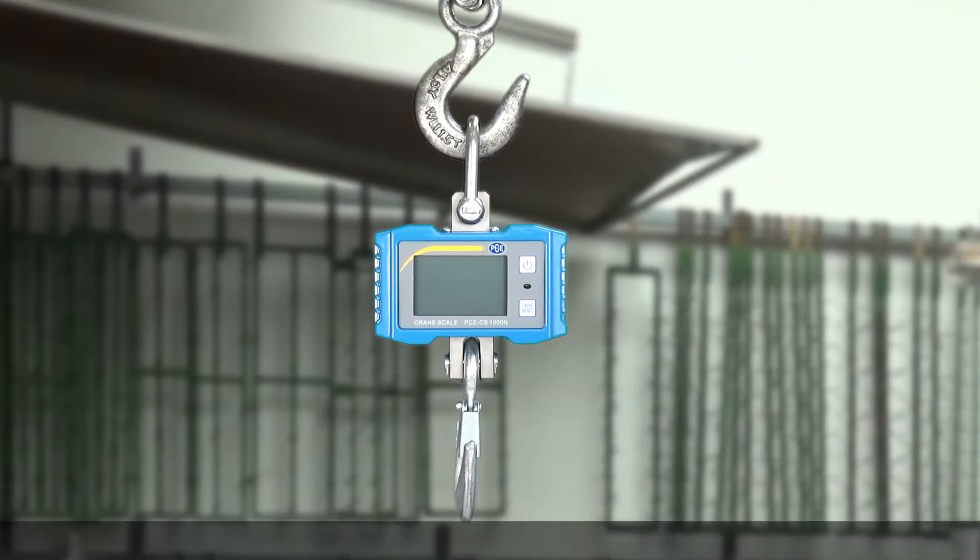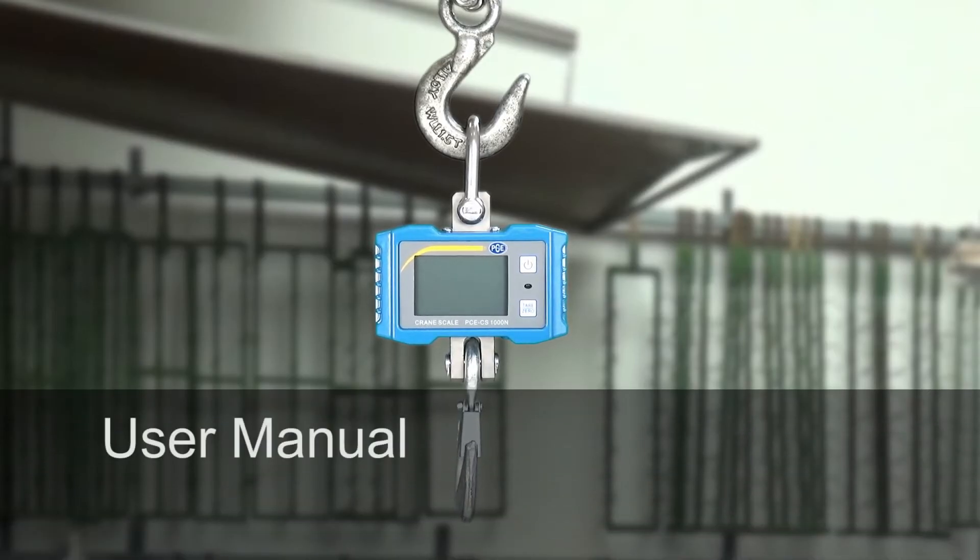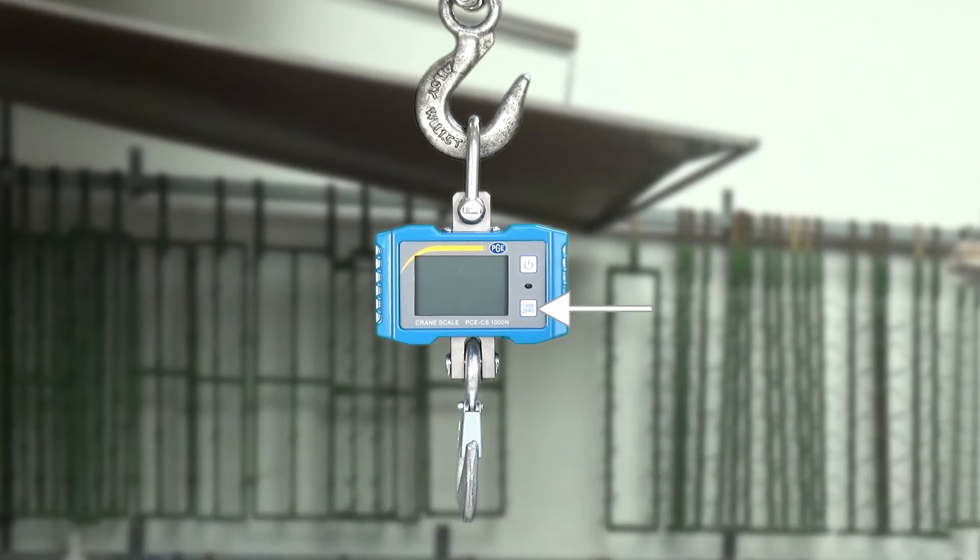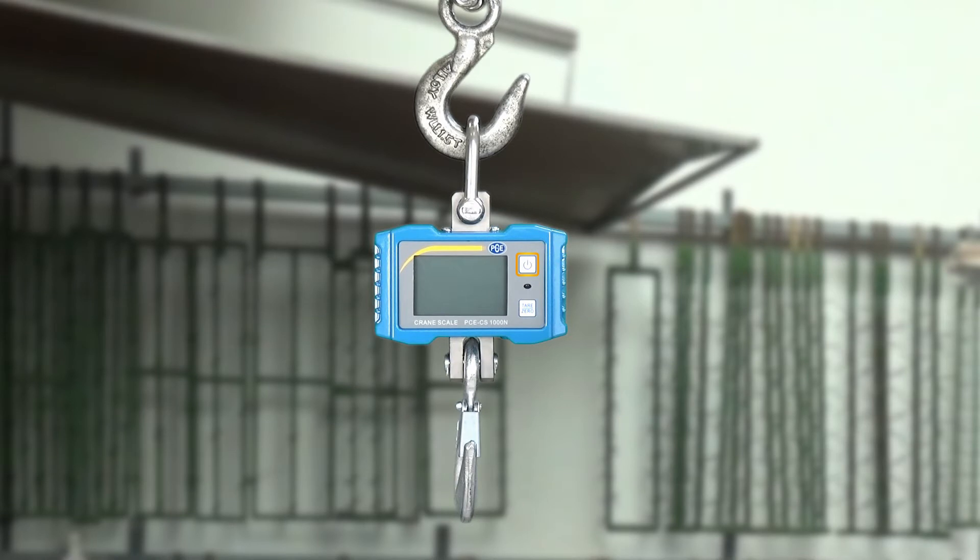The Crane Scale has two buttons. First, in the top area, the button to turn on and off, as well as in the bottom area the button for the tare or zeroing. To turn the scale on, use the top button.